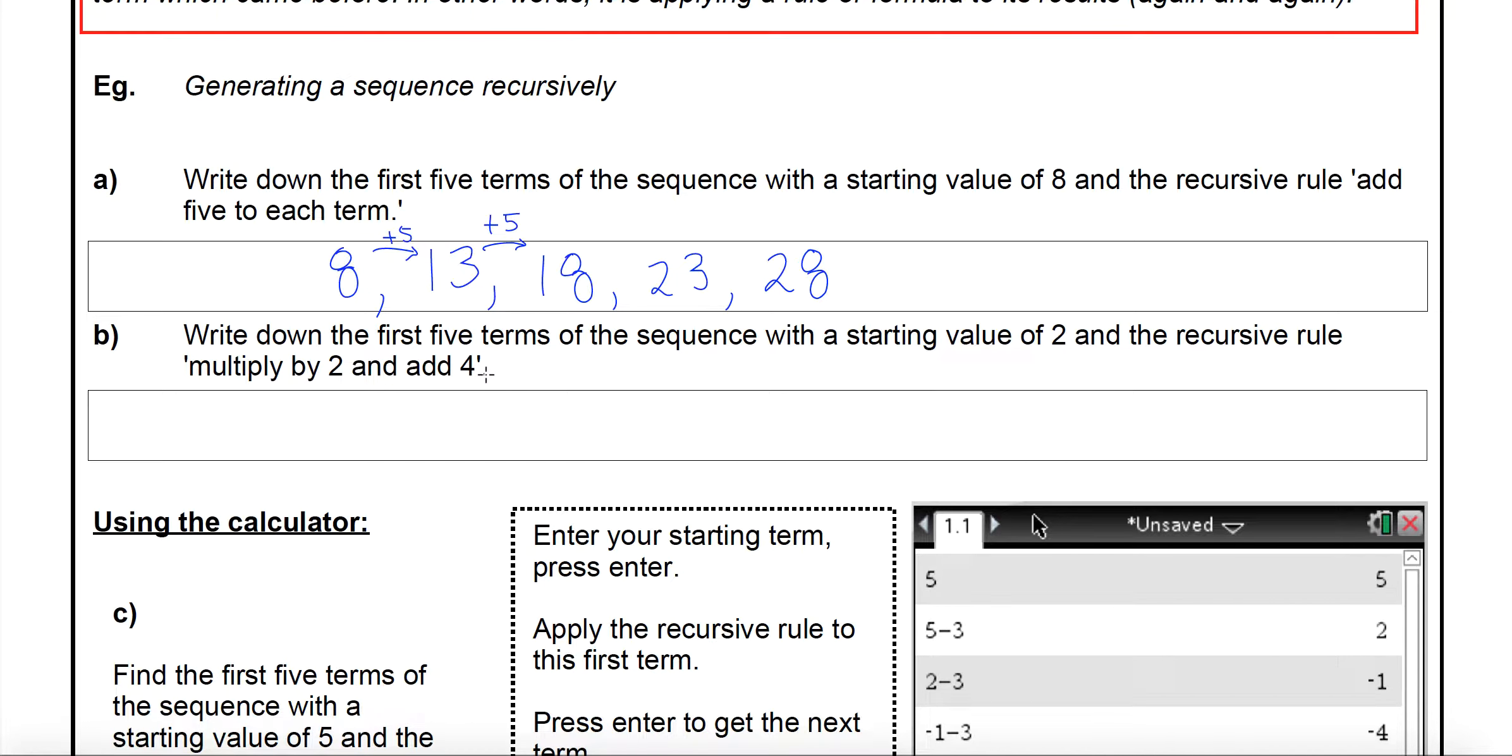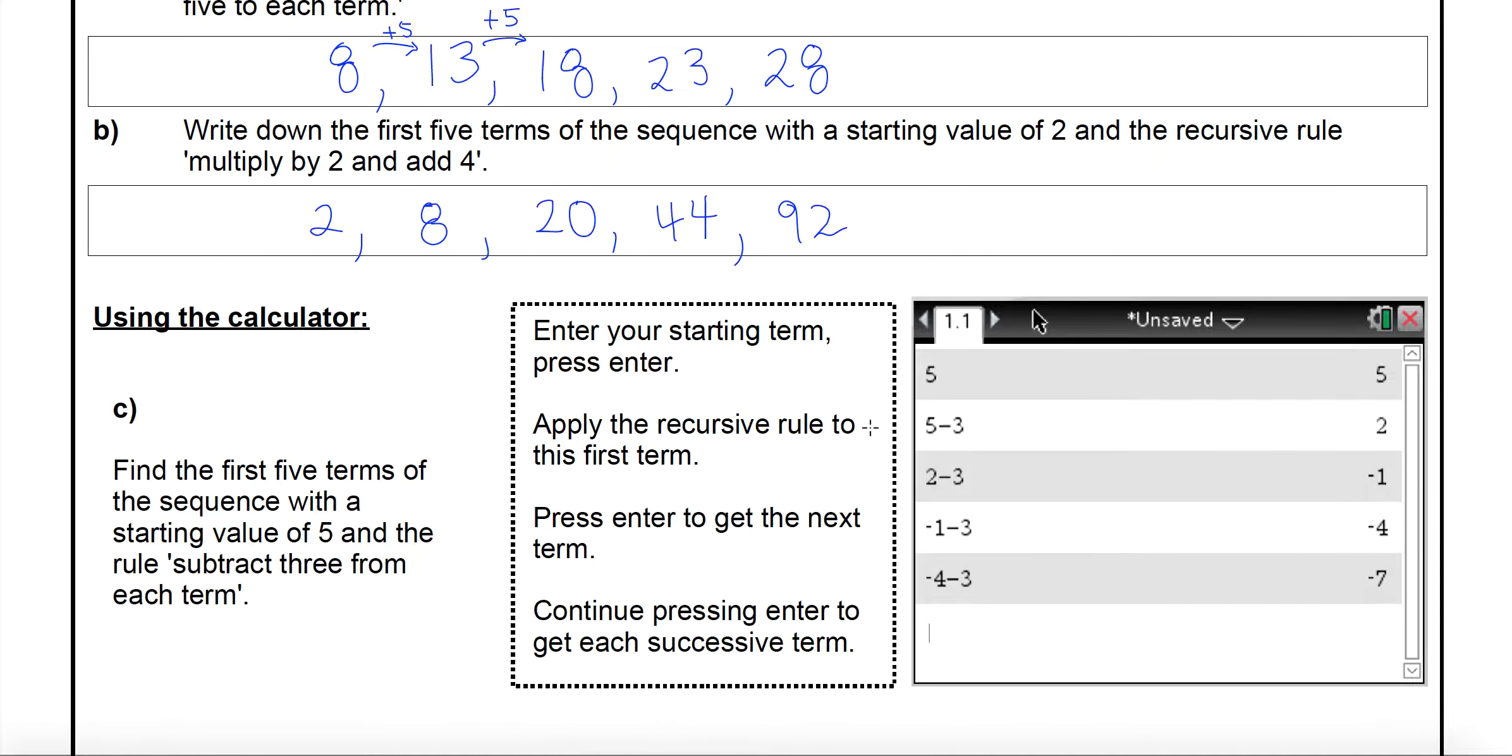This one here is a little bit different because there's actually two steps in the rule: multiply by 2 and then add 4. Starting value is 2. We'll multiply that by 2 and add 4, that will give us 8. Multiply that by 2 and add 4 will give us 20. Multiply that by 2 will give us 40 plus another 4 is 44. Multiply that by 2 will get 88 plus another 4 is 92. So there's our first five terms of that particular sequence.